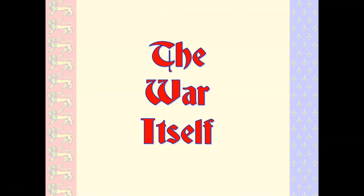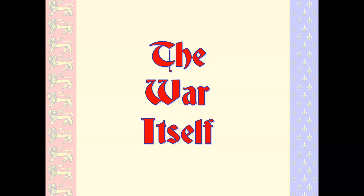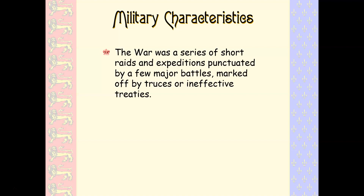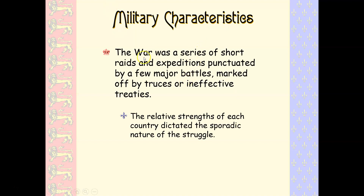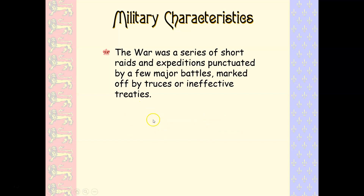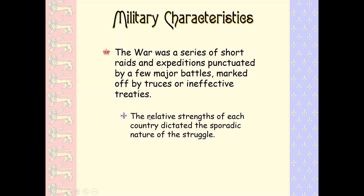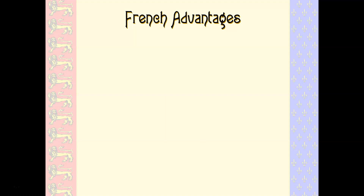The war itself is a series of conflicts fought in about three distinct stages. The first stage the English do very well, the second stage is kind of a tie, and then in the third stage the English look like they're going to win, only to be undone. The war is a series of short raids and expeditions punctuated by a few major battles, and technologically this is a big deal — it's another sign that feudalism is over.